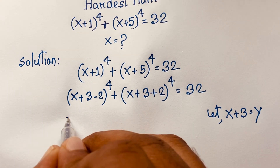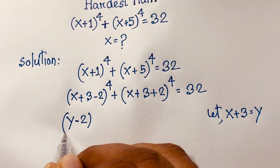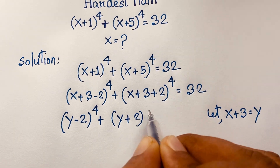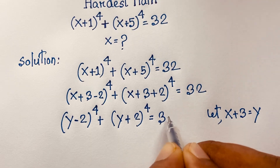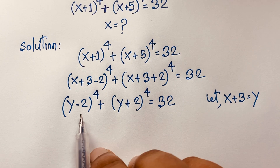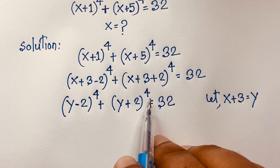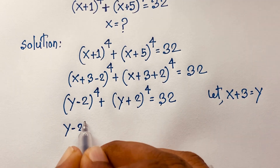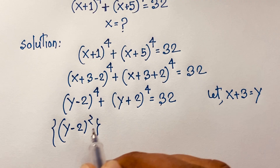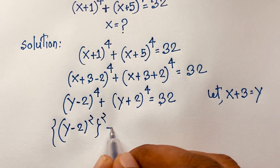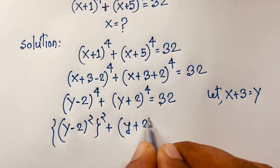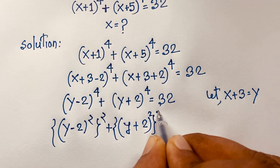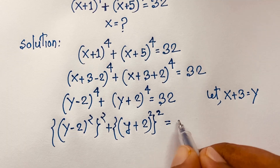After substitution we get: (y−2)⁴ + (y+2)⁴ = 32. Now notice that (y−2)⁴ = [(y−2)²]² and (y+2)⁴ = [(y+2)²]², since 2 times 2 is 4. So we can write this as (y−2)² whole squared plus (y+2)² whole squared equals 32.